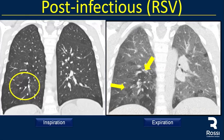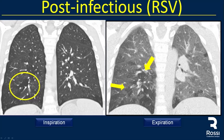In post-infectious disease, you can see several areas of mosaic attenuation — normal lung and areas of low attenuation. We perform expiratory CT and we can see areas of air trapping, mainly in the right lung and some small areas of air trapping in the left lung.